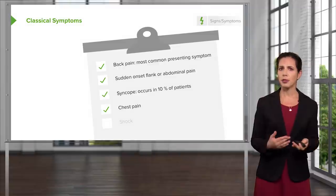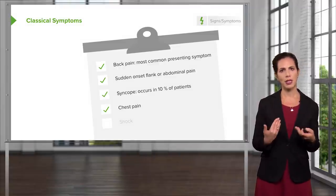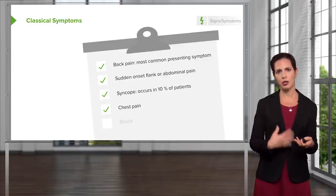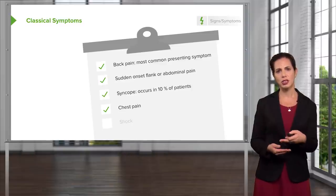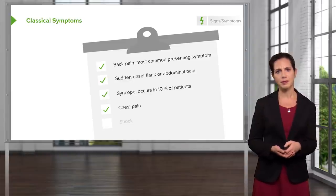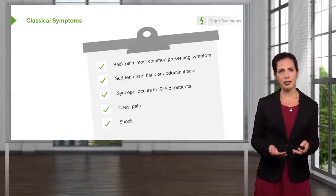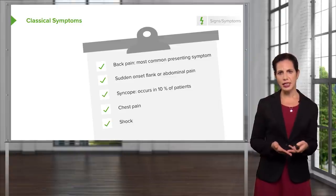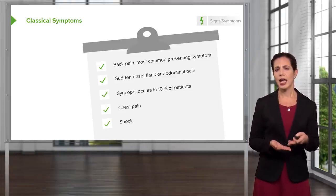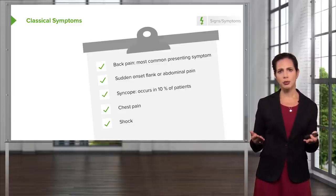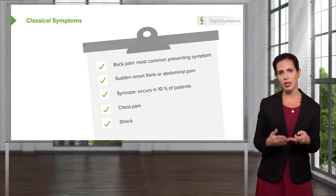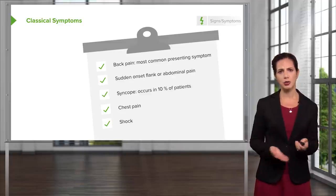Chest pain is another presentation because along with AAA there can also be problems with the aorta within the chest cavity. Keep in mind that the aorta is a large blood vessel that starts from the heart and runs through the thoracic aorta and into the abdomen. Shock is also a presentation — patients may present hypotensive with an elevated heart rate. When your aorta ruptures, your body recognizes that quickly, and since it is such a large blood vessel, you can lose immense amounts of blood into your abdominal cavity in a very short period of time.